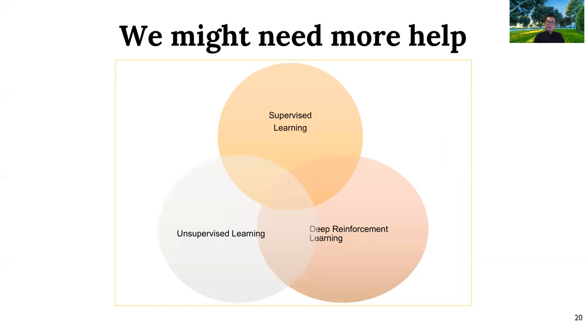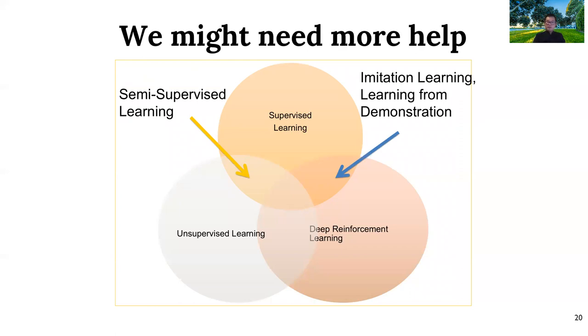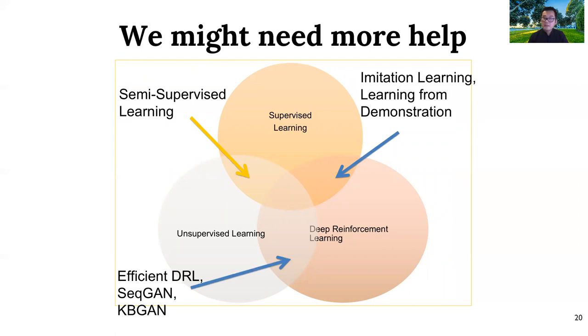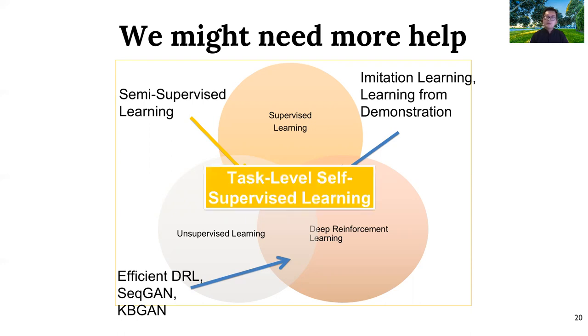How do we get to task-level self-supervised learning in NLP? There are different areas of machine learning to consider. Unsupervised learning intersects with supervised learning in semi-supervised learning. Supervised learning intersects with deep reinforcement learning in imitation learning and learning from demonstrations. Unsupervised learning intersects with deep reinforcement learning in efficient DRL and generative adversarial networks, which utilize adversarial learning to achieve self-supervised learning.